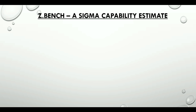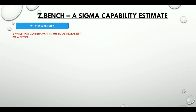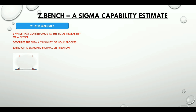So what is ZBench? It corresponds to the total probability of a defect. We use ZBench values to describe the sigma capability of a process, and these values are based on a standard normal distribution where the mean is 0 and standard deviation is 1. Let's look at a process scenario where all the defects of the process fall on either side of the specification limits.